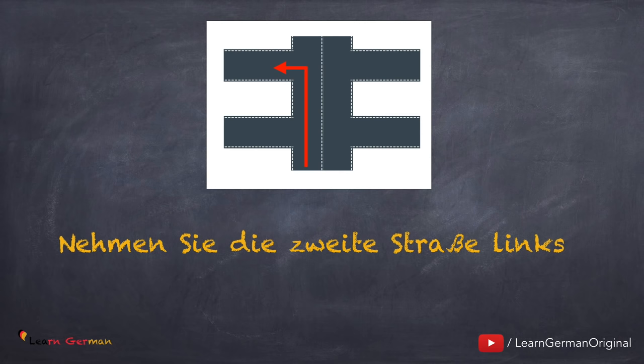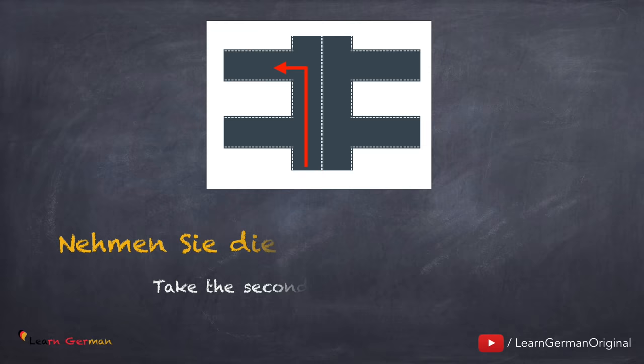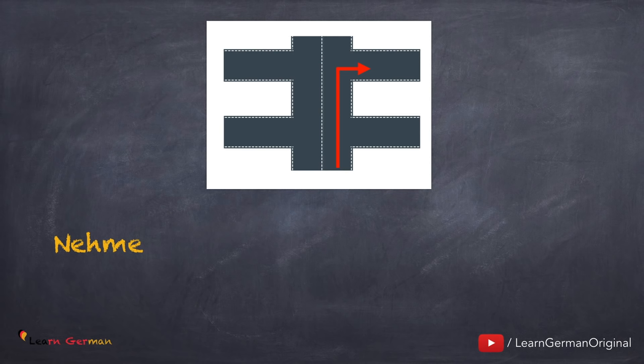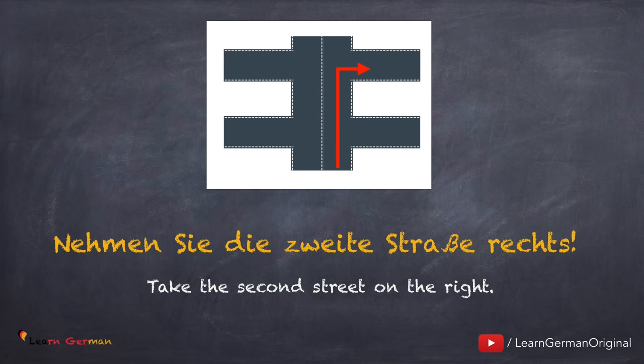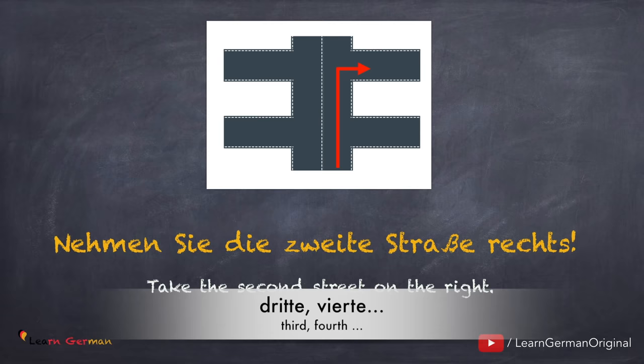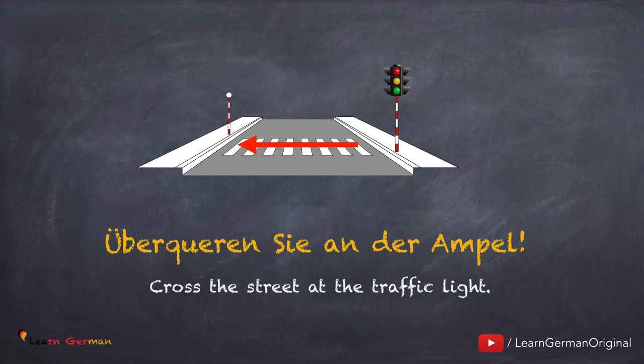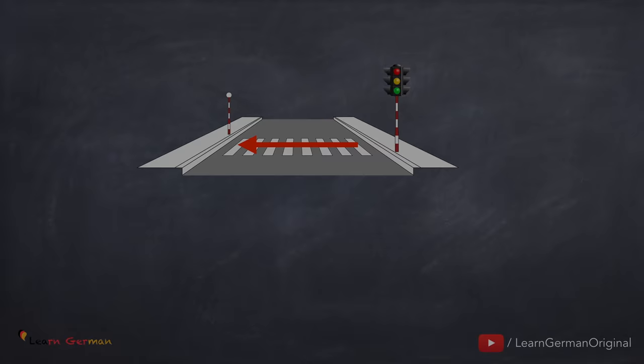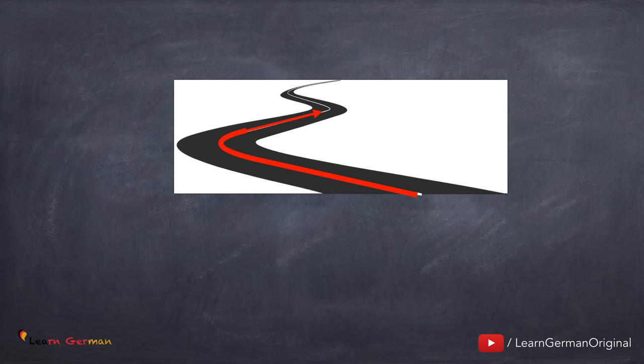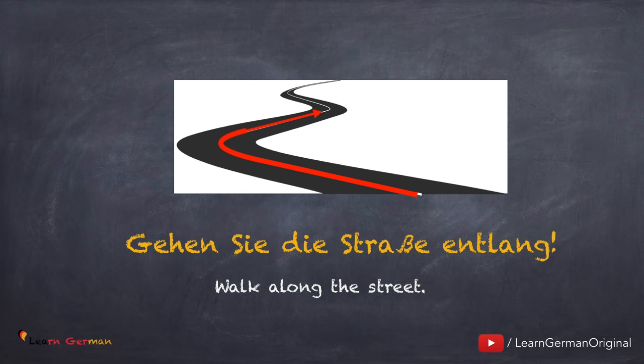Let's move on to the next one: 'Nehmen Sie die zweite Straße links.' Similarly: 'Nehmen Sie die zweite Straße rechts.' You can also say 'dritte Straße', 'vierte Straße', etc. And the next one is: 'Überqueren Sie an der Ampel.' If you have to go along a street you would say: 'Gehen Sie die Straße entlang.' You can also use the name of the street.